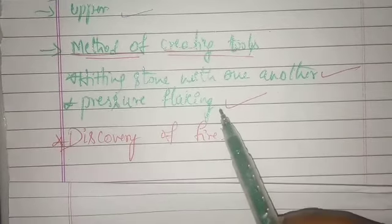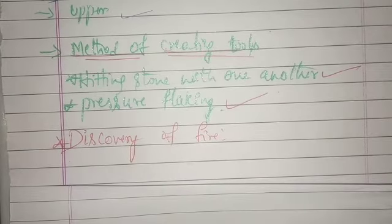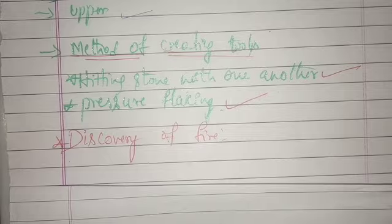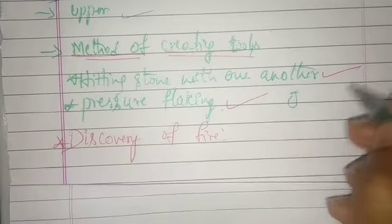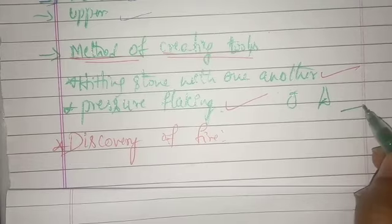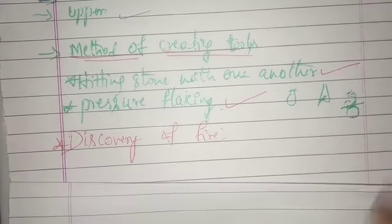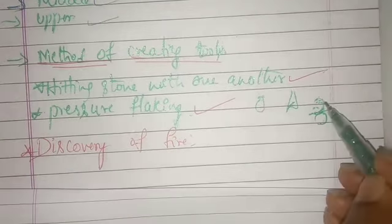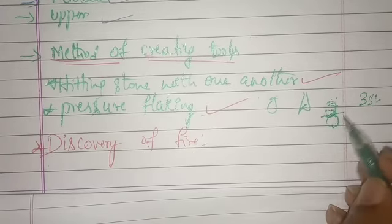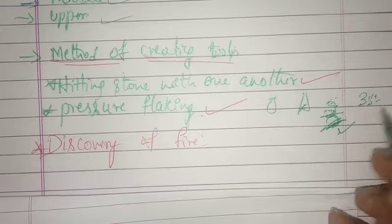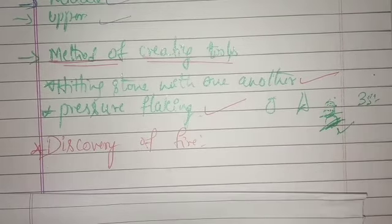In the pressure flaking method, instead of hitting one stone directly with another, they kept one stone at a particular place at a certain angle. On top of that, one more stone was placed at a certain angle. The second stone was then hit with a third stone to give the first stone its desired shape. So two stones are positioned — one below the other.